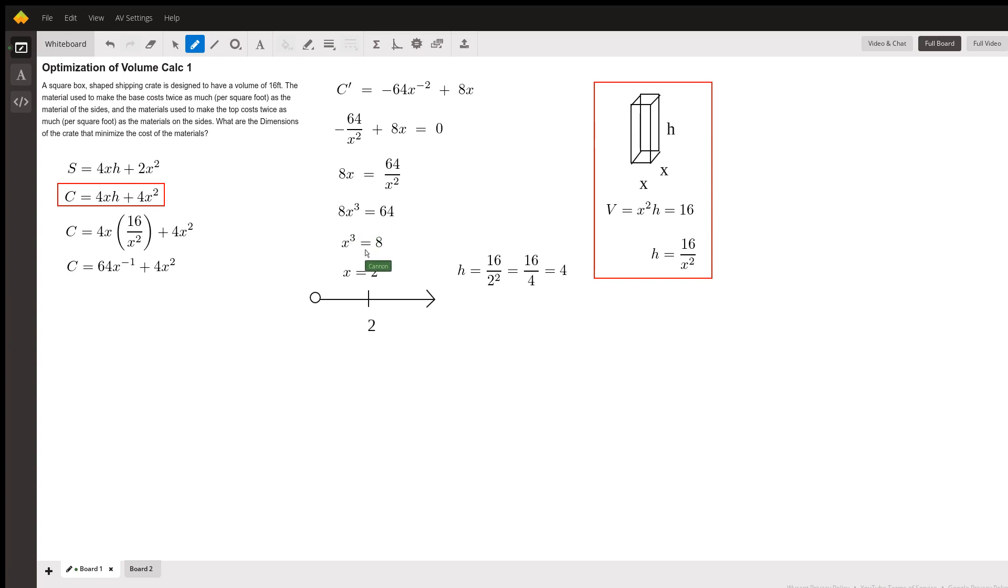A lot of times on these max and min problems we can tell from context if this is a minimization or maximization, but it doesn't hurt to double check. The way we check: you plot that critical point on a number line. Our number line starts at zero—you can't have a box with negative lengths. Let's pick a value between zero and two, let's say one. If we plug one into our derivative, negative 64 over one plus eight times one, that's a negative number. So our derivative is negative there.